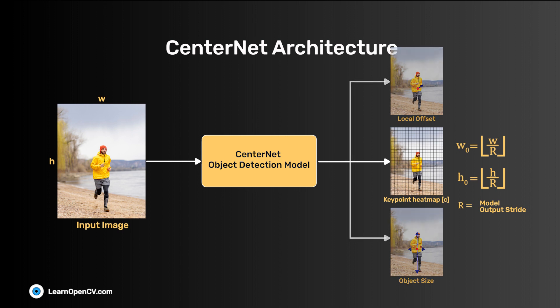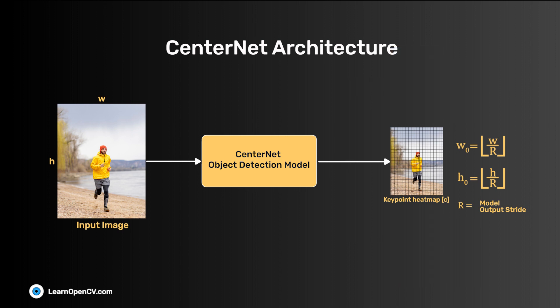The heatmap values are assigned using an exponential distance. At the object center, the heatmap value is 1, and it decreases exponentially as it moves further away from the object center. There are C channels of the heatmap, where C is the number of object classes.